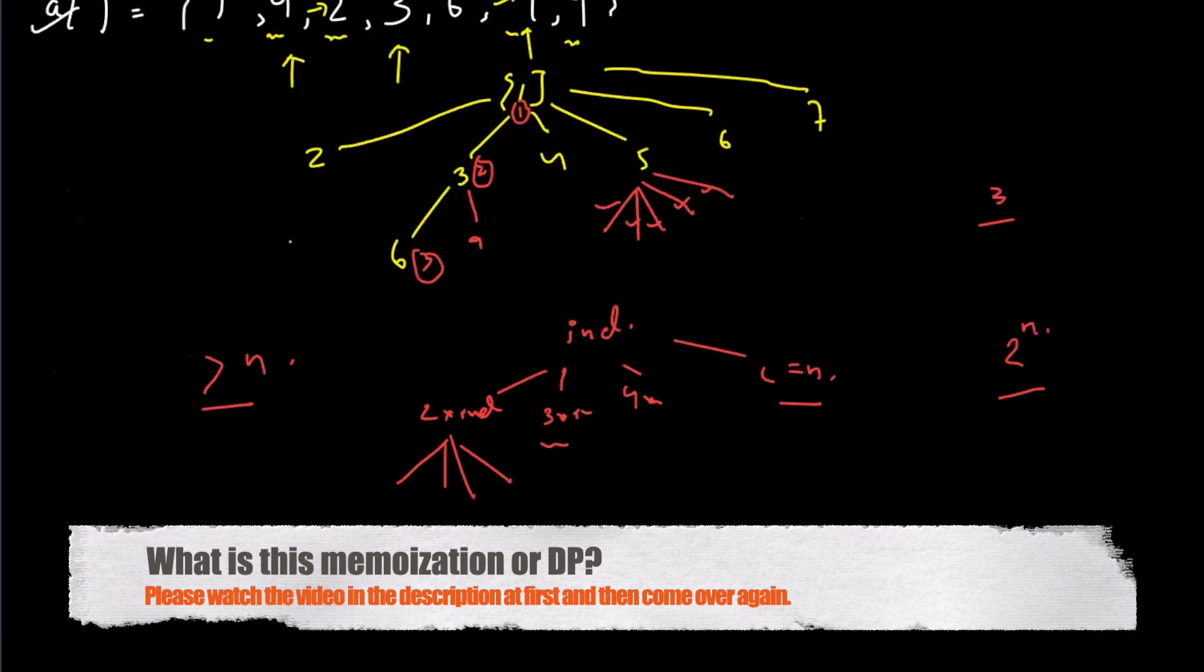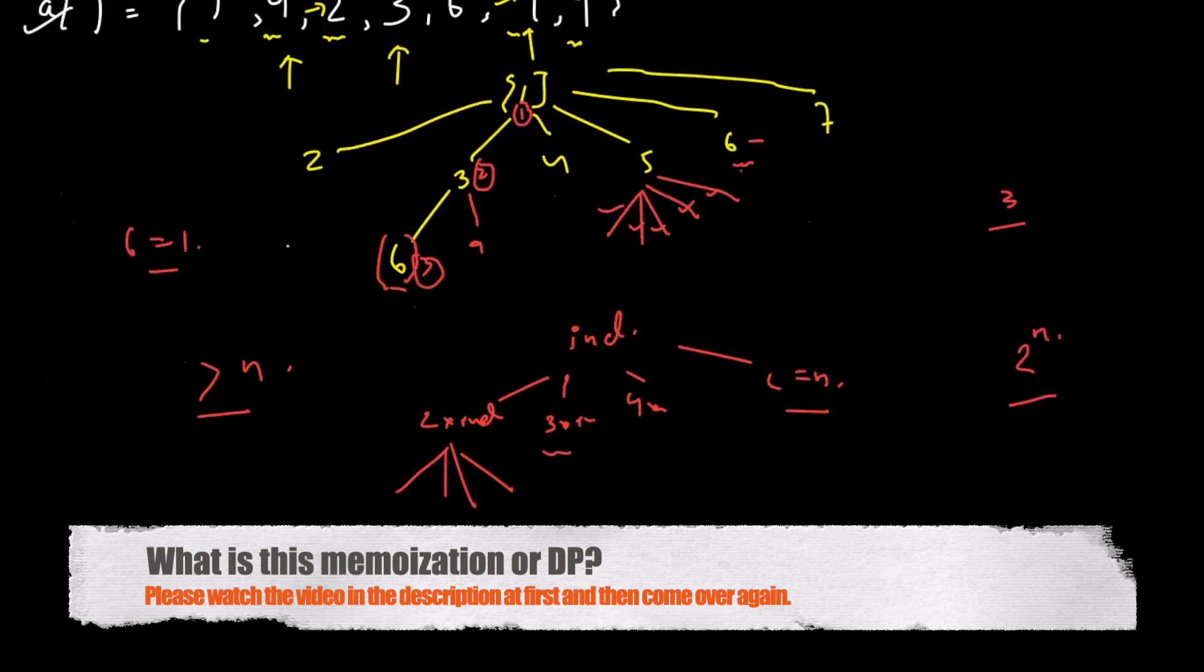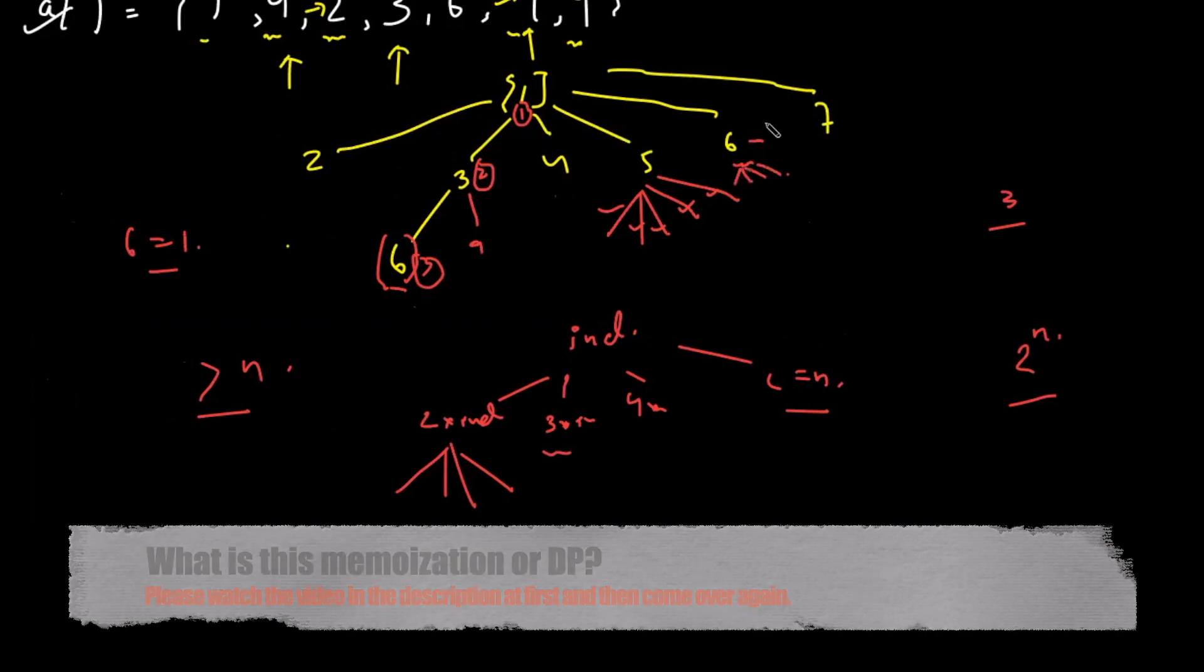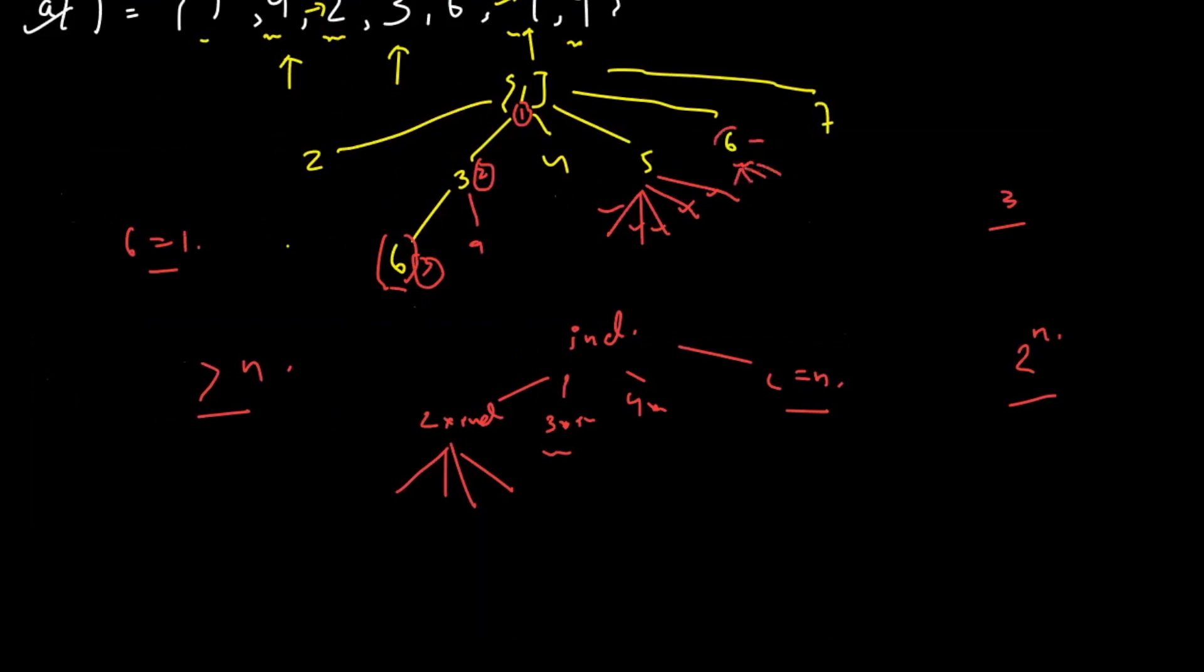Now let's see how does memoization work. So we saw that we had an answer for six over here. So the answer for six over here would have been one. Instead of checking out all the multiples of six, what we can do is, we can simply return the value stored over here. Because dynamic programming is this. If you have visited any state previously, you do not revisit it. Instead, return it.